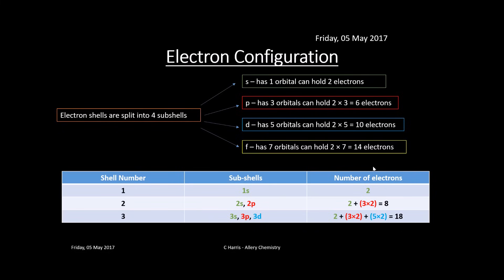For electron configuration, electrons are split into four subshells: s, p, d, and f. The s orbital is spherical and can hold two electrons. The p orbitals are figure-of-eight shaped; there are three p orbitals each holding two electrons, so the p subshell holds six electrons total. The d subshell has five orbitals holding two electrons each — ten electrons total. The f block has seven orbitals holding fourteen electrons total.